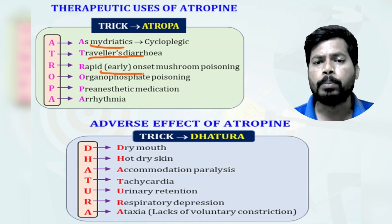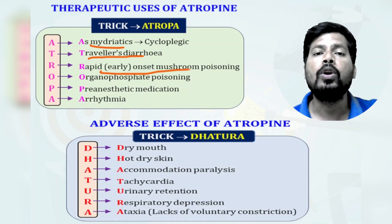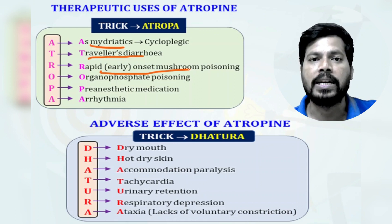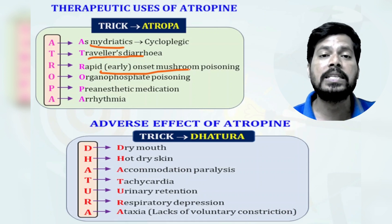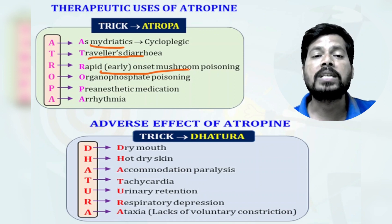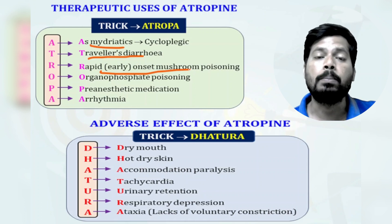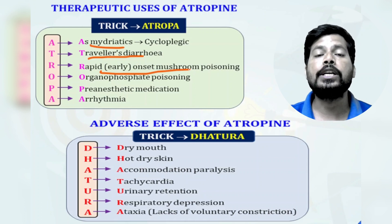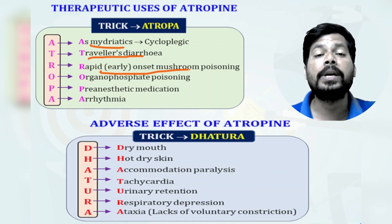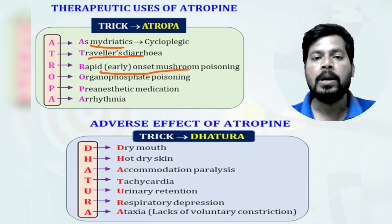Atropine is used to control rapid-onset mushroom poisoning. For example, the mushroom Amanita muscaria contains muscarine — and muscarinic receptors are named after it. When muscarine levels increase in the body, acetylcholine action increases, producing Amanita muscaria mushroom poisoning. Atropine blocks the muscarinic receptors and prevents further binding of muscarine.